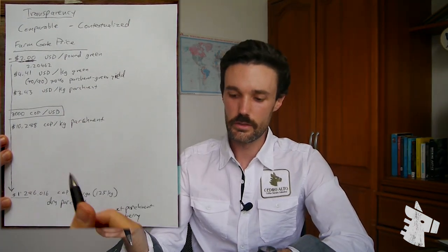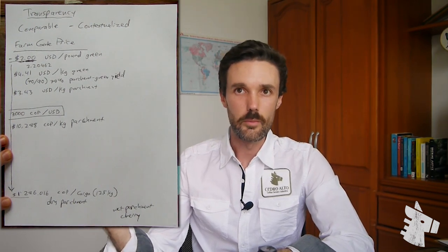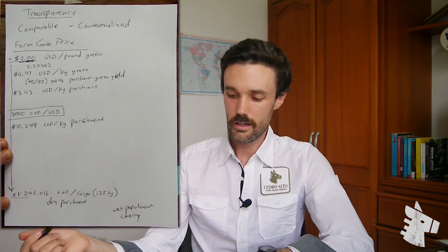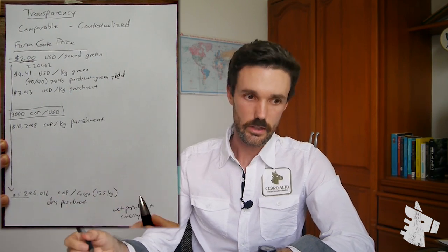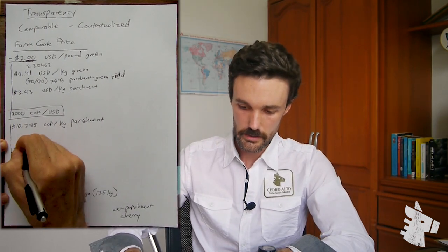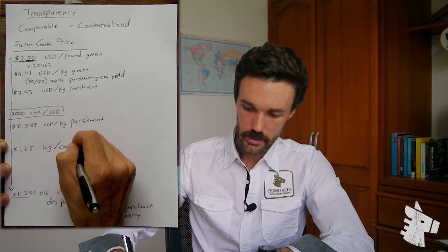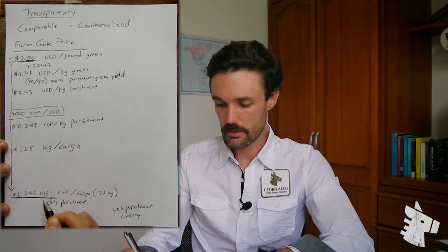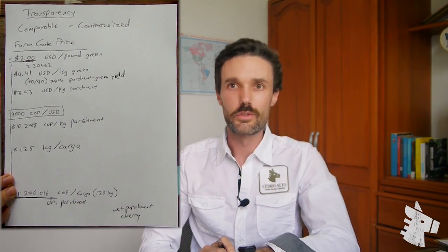Some places, like in Nariño, use Colombian pesos per kilo, so things are a bit simpler. Here where we are in Pereira, we use arroba — Colombian pesos per 12.5 kilos. But most of the areas I'm familiar with use cargas of 125 kilos. So we then multiply 10,288 times 125 kilos per carga, and that's how we get 1,286,016 Colombian pesos per carga.